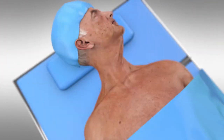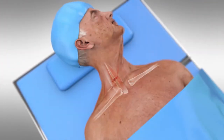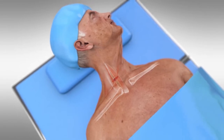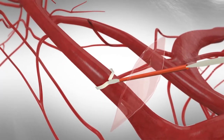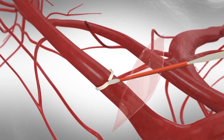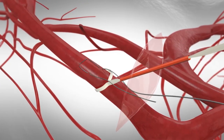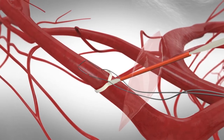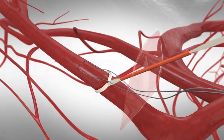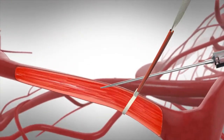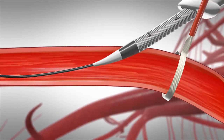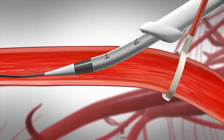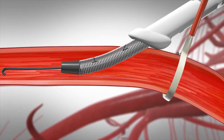The TCAR procedure begins with a small incision just above the collarbone to expose the carotid artery. A vessel loop is placed to control and clamp the artery during the procedure, and a suture is placed for easy closure of the puncture site at the end of the case. A specialized sheath is placed through a small puncture in the common carotid artery. This sheath will be used to deliver a stent.